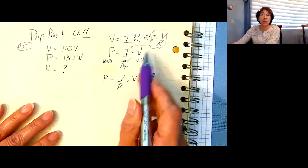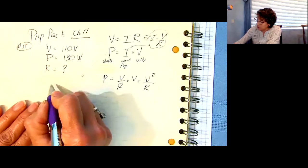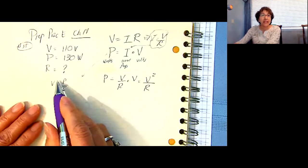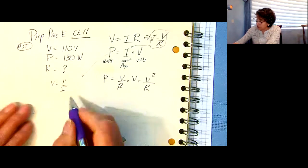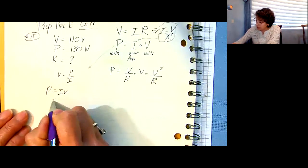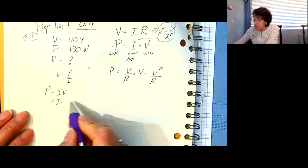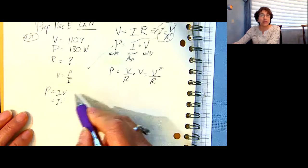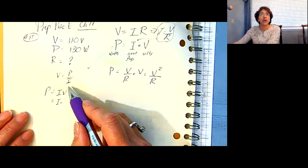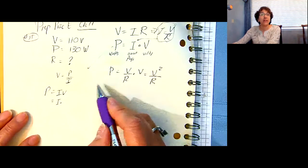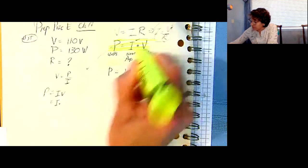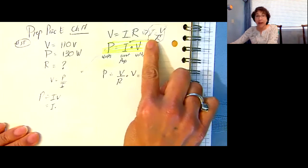So I solved it for I. From here, I know that V is equal to P over I. So I'm going to take this V, and I'm going to replace it there. P is equal to IV. I'm going to replace the V with the P over I. I'm getting myself turned around. I wanted to solve for V. I want to solve for V.